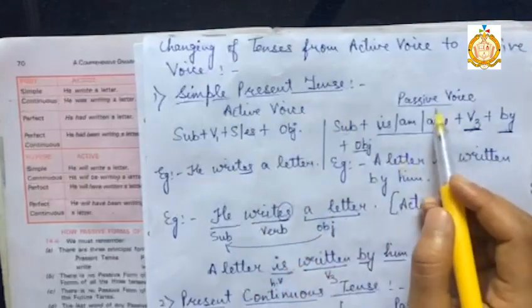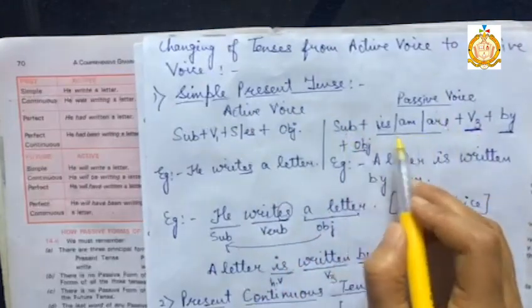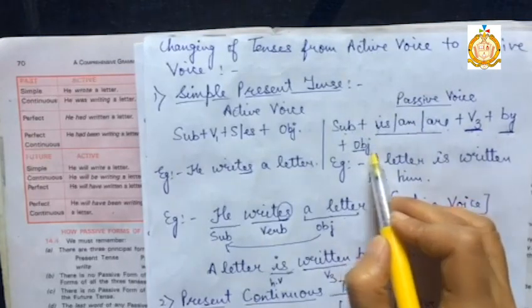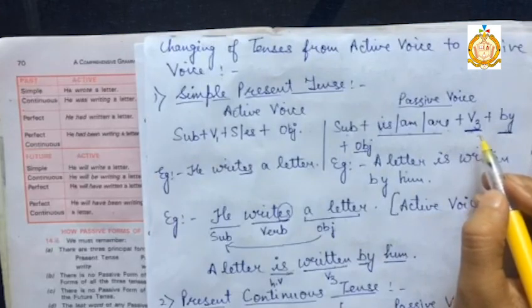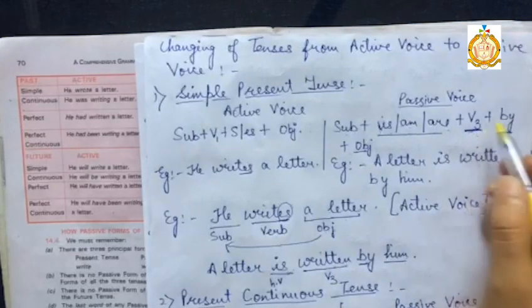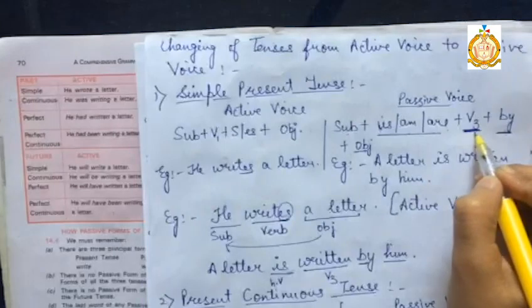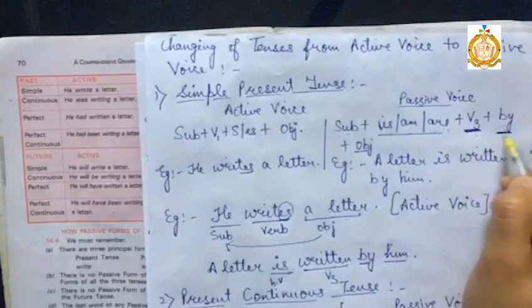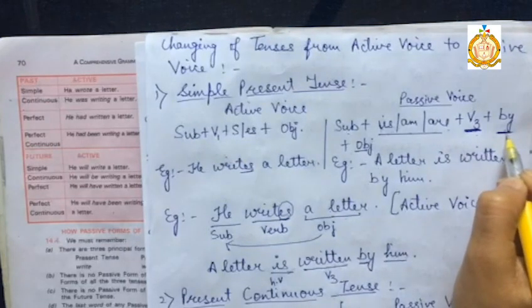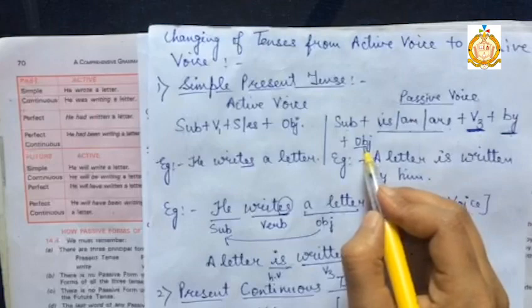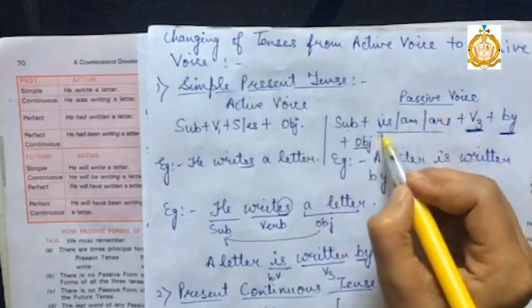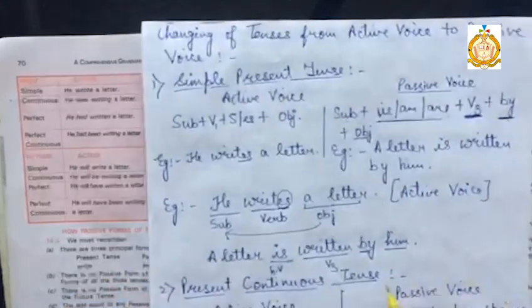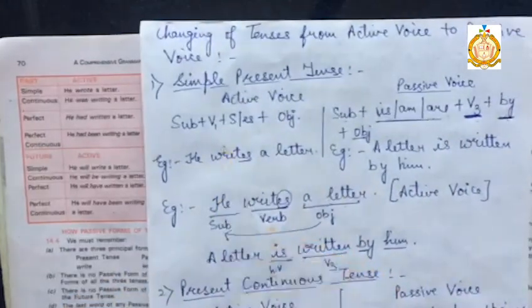For example, if a sentence is in simple present tense, its passive voice formation will be: Subject + is/am/are + verb's third form + by + object. Note that certain things will not change across all tenses — verb's third form will be there in all sentences whether past, present, or future tense. The preposition 'by' will be applied to all sentences, and the object will be changed accordingly. The only change will be in the helping verbs.